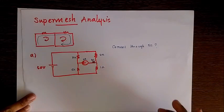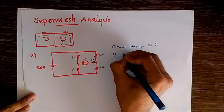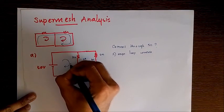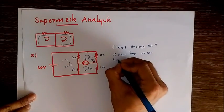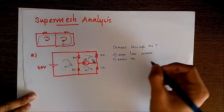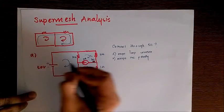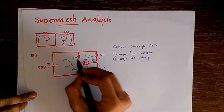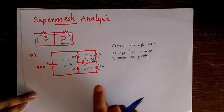First we have to proceed as in mesh analysis. Step one is to assign loop currents. Next we assign the polarities — this is optional because if you have practiced a lot you can directly write the equation. I'll write plus-minus across each element. For the common branch of two loops, we don't write polarities. If you have any doubt, you can refer to my previous video on mesh analysis.